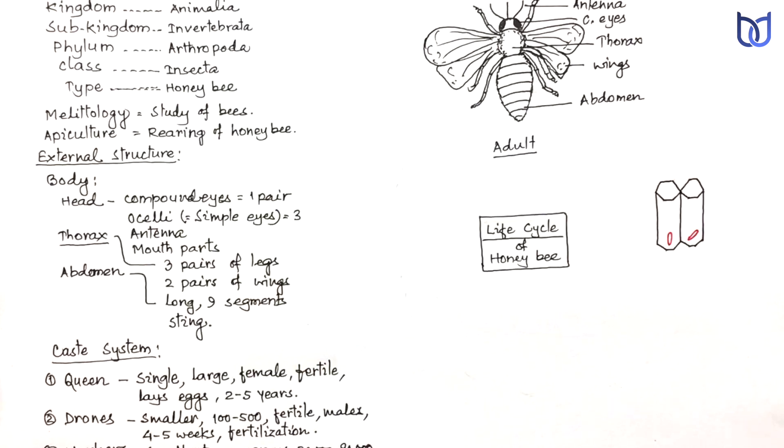Most of the eggs are fertilized, having 32 chromosomes, and such eggs develop into queens or workers. While some eggs are unfertilized, having 16 chromosomes only. These are called haploid and these develop into drones. The eggs hatch into larvae in the next three days.